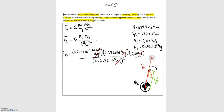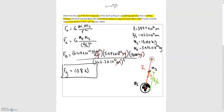We're ultimately left with Newtons, and since we're expecting a force, the units match up. Plugging everything into the calculator, the gravitational force on the spaceship is equal to 108 Newtons. Now we'll move on to the second problem.